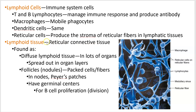The reticular connective tissue is the base structure. It can be found either as diffuse lymphoid tissue, which is scattered in lots of tissues throughout your body, or as follicles, which are more compact units of lymphoid tissue. These are famously found in your lymph nodes and Peyer's patches, which we'll talk about later.